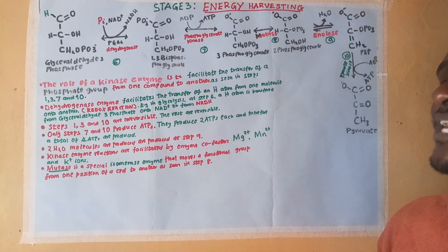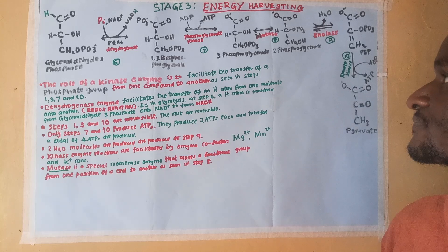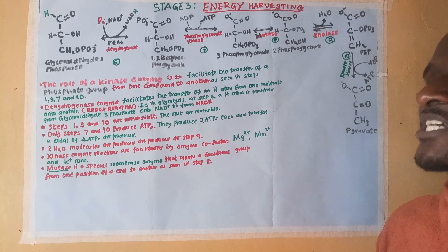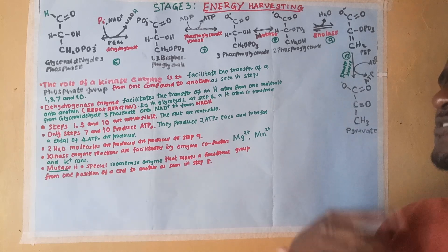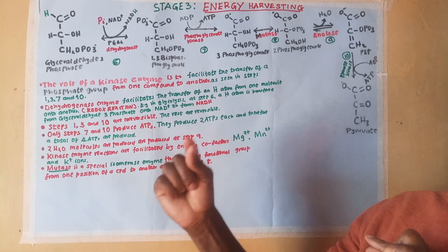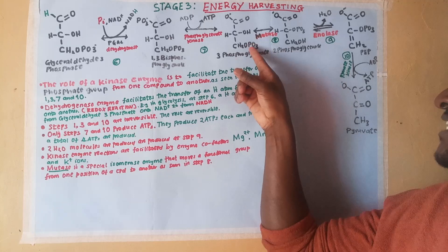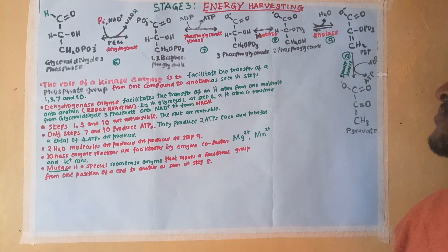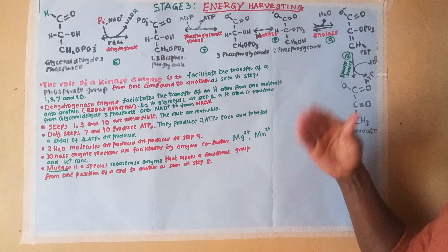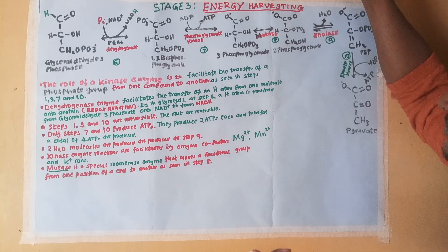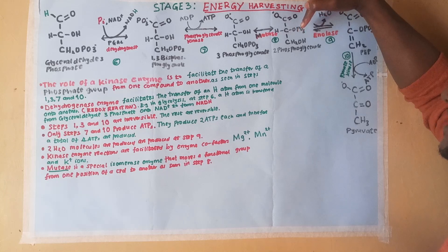Step 8 is facilitated by a mutase enzyme. A mutase is a special isomerase enzyme whose function is to transfer a phosphate group from one position of a compound onto another position of the same compound. In this case, the mutase enzyme moves a phosphate group from carbon number 3 of 3-phosphoglycerate to carbon number 2, so the resulting compound is 2-phosphoglycerate. This is done because we are moving towards a more stable molecule that will lead to production of pyruvate. 2-phosphoglycerate is a more stable compound compared to 3-phosphoglycerate.